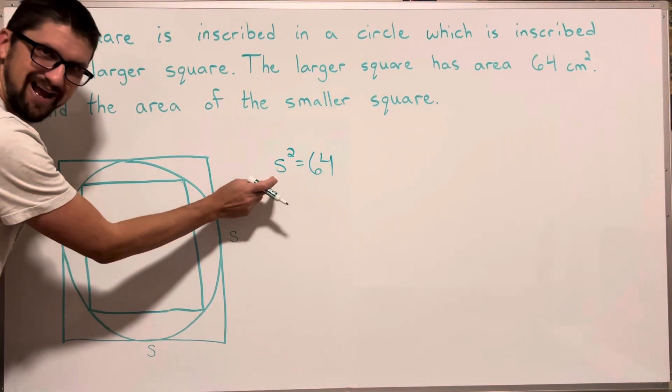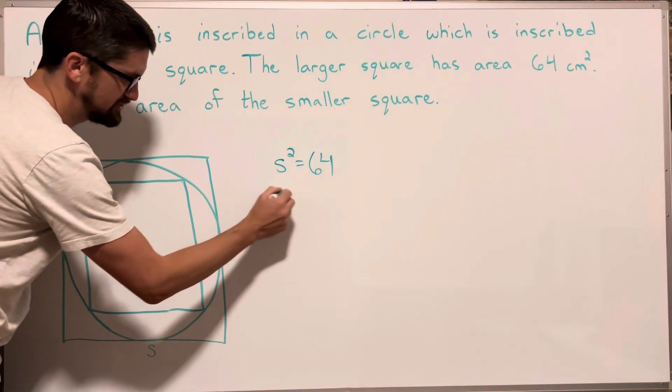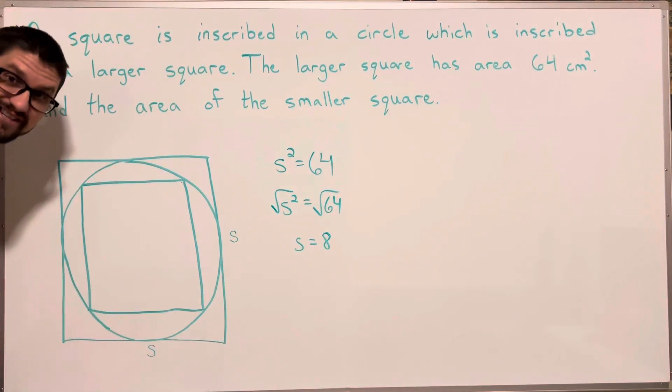Now I can solve this for s. It's going to be 8 because 8 squared is 64, or you can square root both sides. You can find that s comes out to 8.